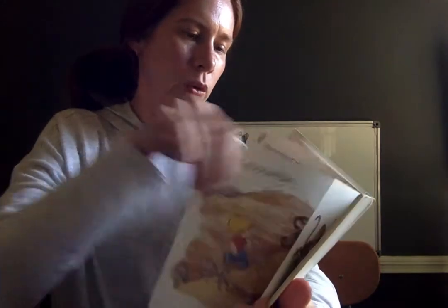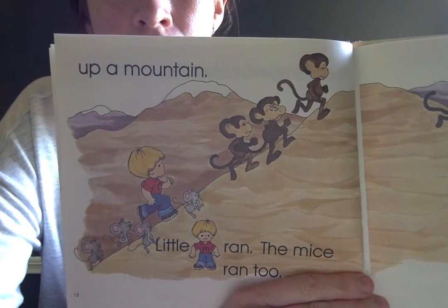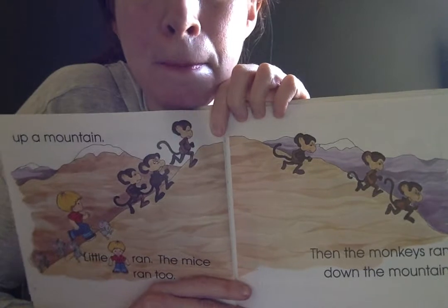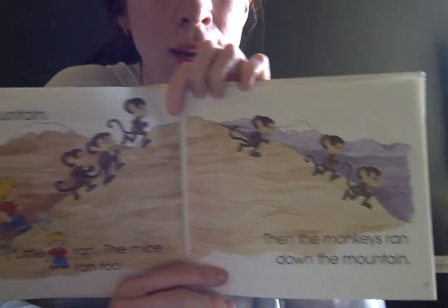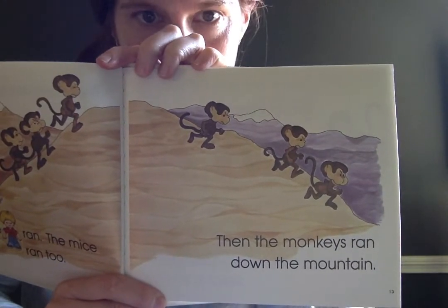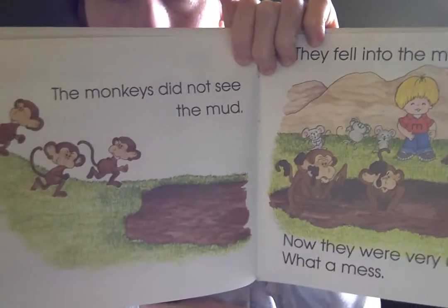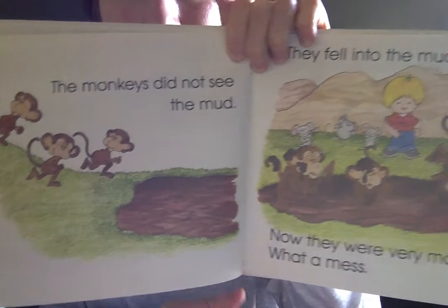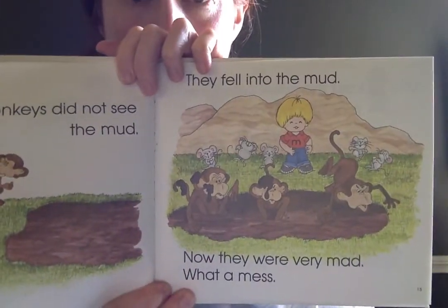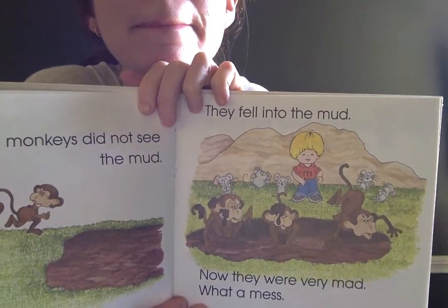Oh, where are they going to go? They ran up a mountain. Little M ran. The mice ran too. Did you see the mountain? Did you say mountain? Then the monkeys ran down the mountain. The monkeys did not see the mud. Oh no. They fell into the mud. Now they were very mad. What a mess.